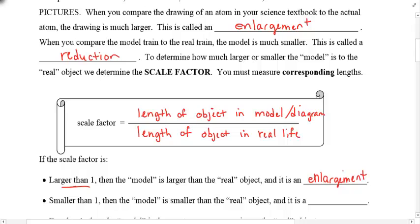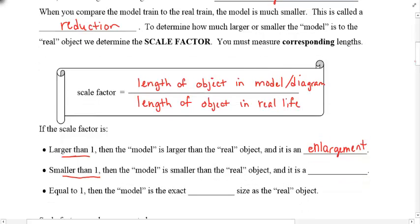Whereas if the actual scale factor is smaller than 1, then yes, we have the reduction. What happens if it's equal to 1? Well, it's just the exact same size. That's all.